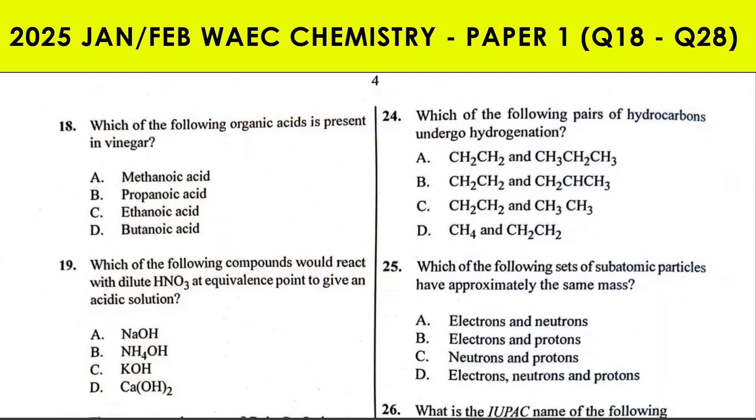Question 18 says which of the following organic acids is present in vinegar? Now vinegar is the natural source of ethanoic acid, that's CH₃COOH. The natural source of ethanoic acid is ants or bees.